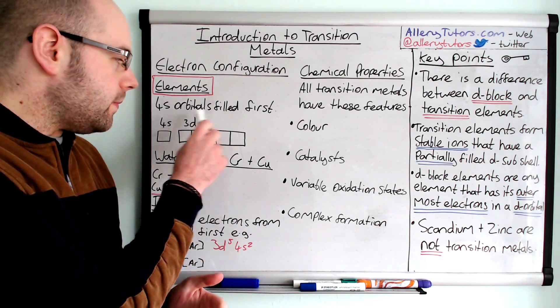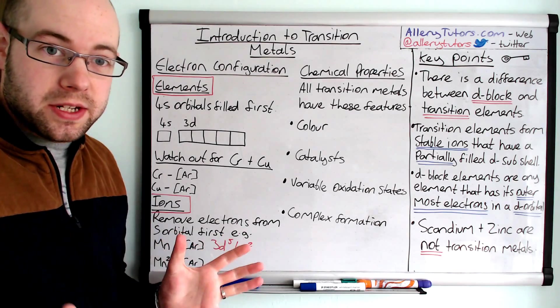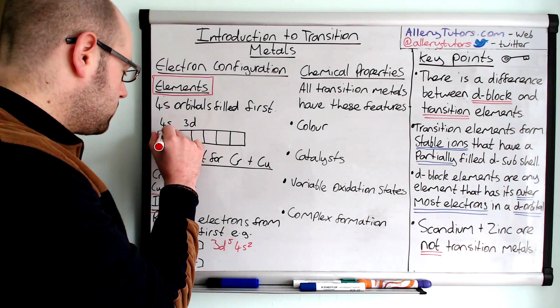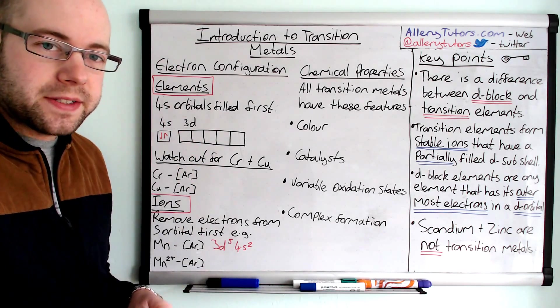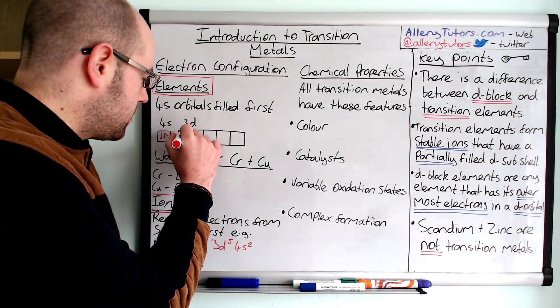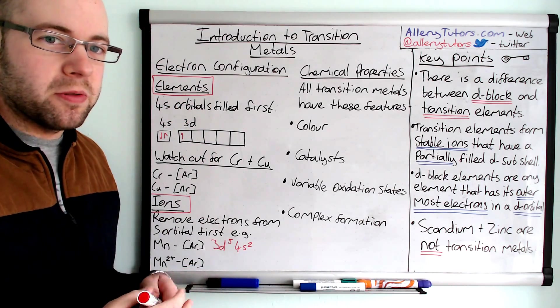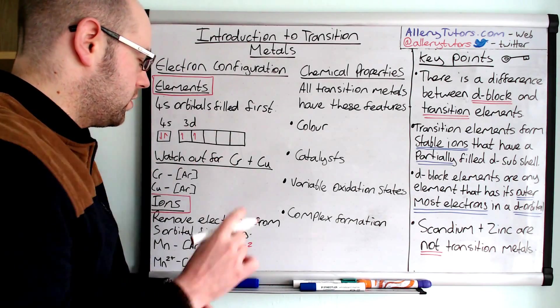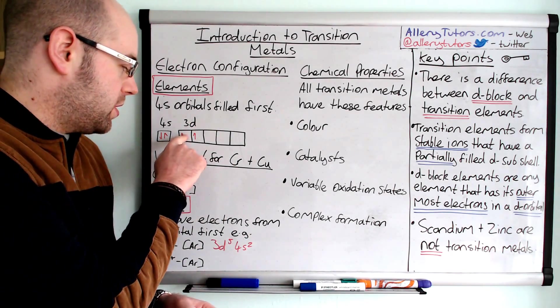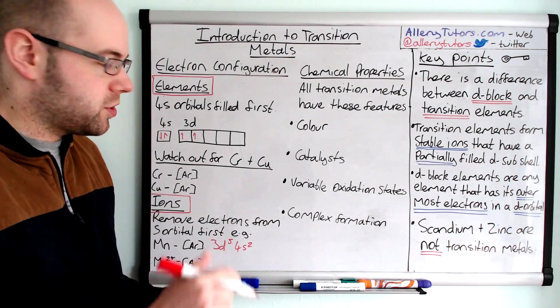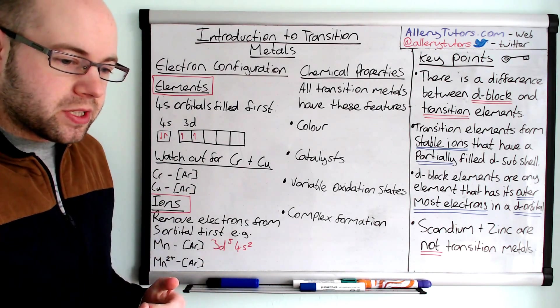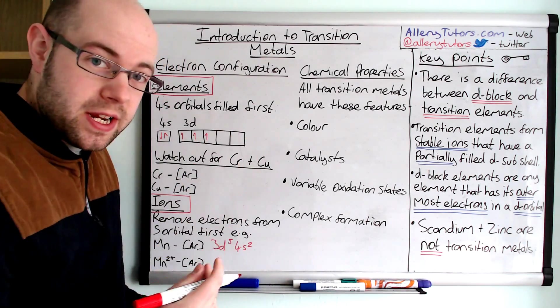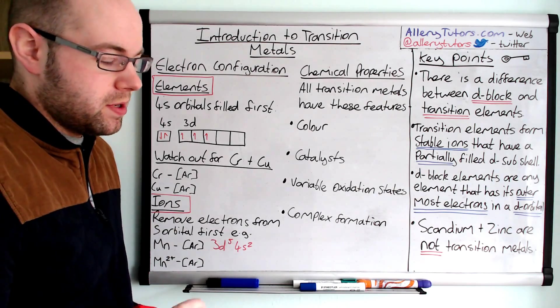We're going to start with the first element in the d block, which is scandium. Scandium has two electrons in the 4s orbital, and it also has one electron in the 3d orbital. Remember, we're talking about elements here, so we're not talking about the ionic version. If we go next along to titanium, titanium would have one electron in the next orbital. Remember, we can't put the electron in the same orbital because of electron repulsion, so they sit in the separate orbital. If we come on to the next one, which is vanadium, vanadium has got three electrons in there.